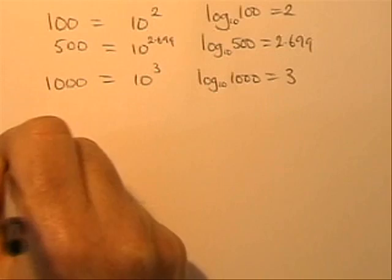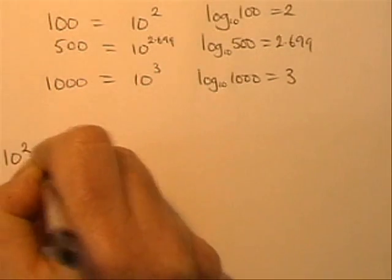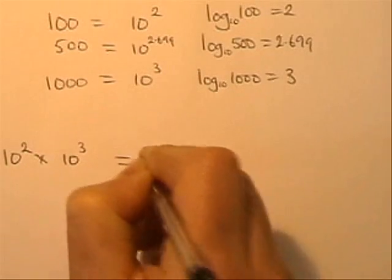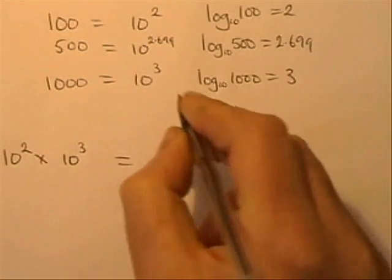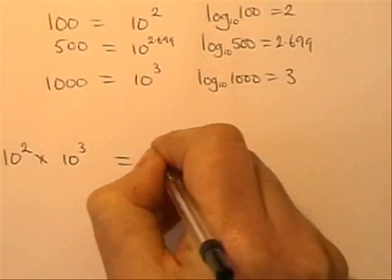So if I take 10 to the power 2 and I multiply it by 10 to the power 3, then the answer is it's 100 times 1000, so 100,000 which is 10 to the power 5.